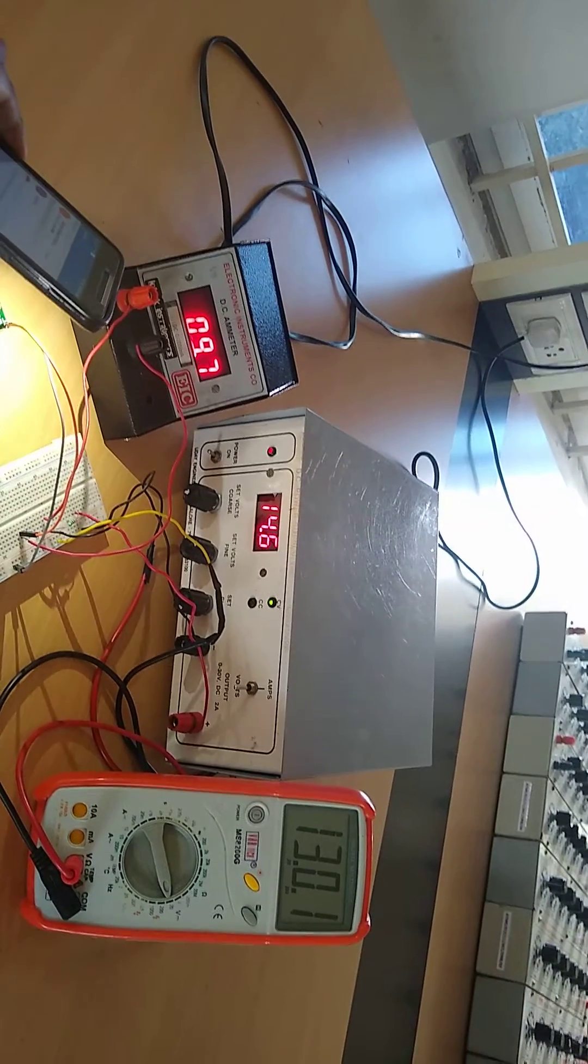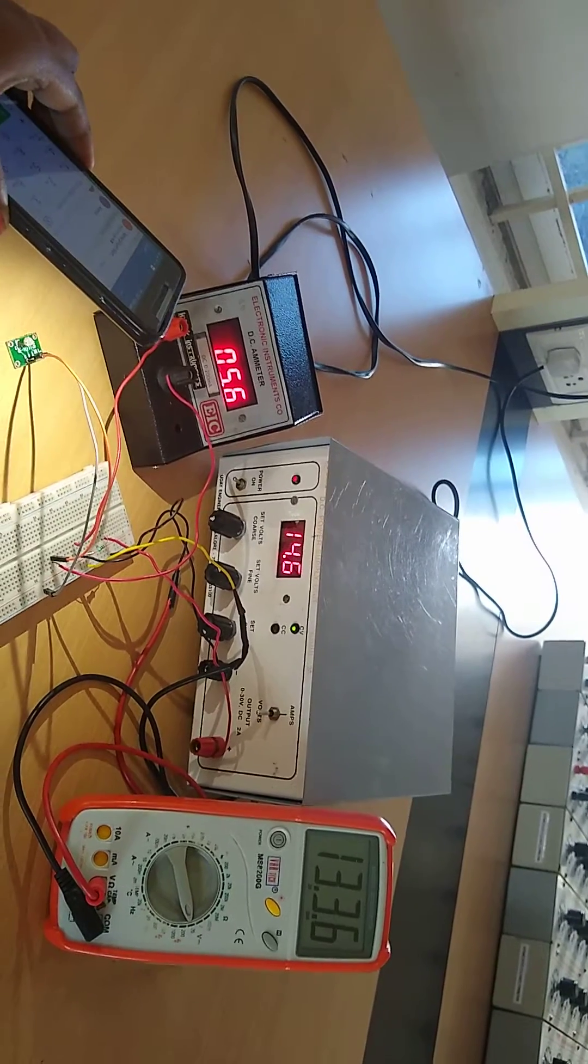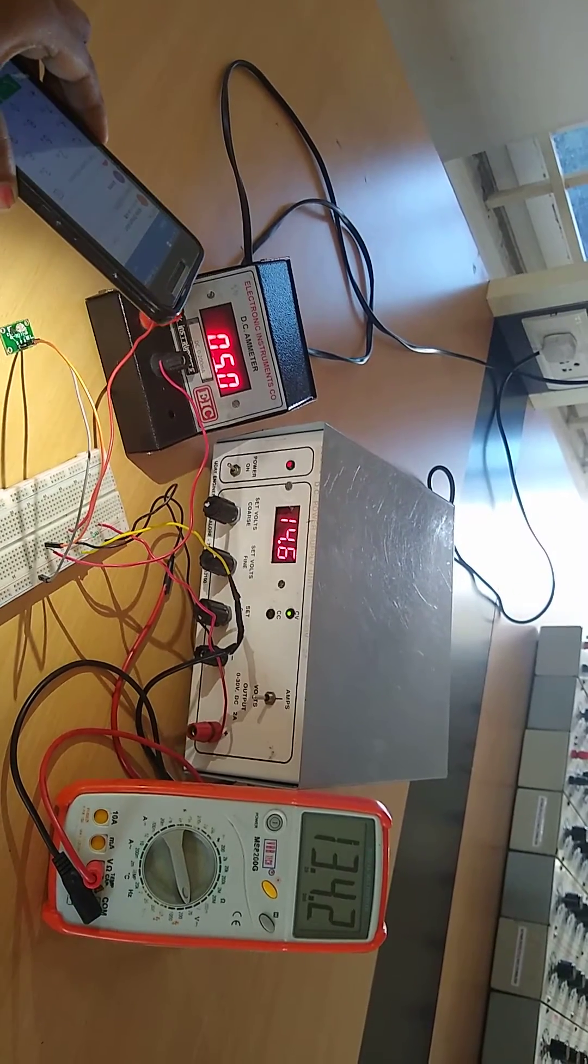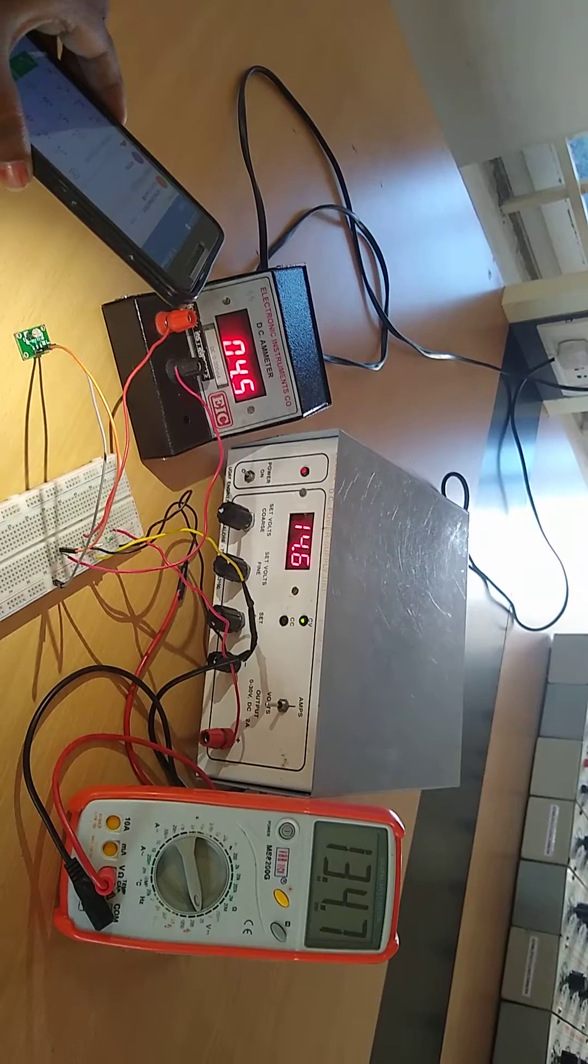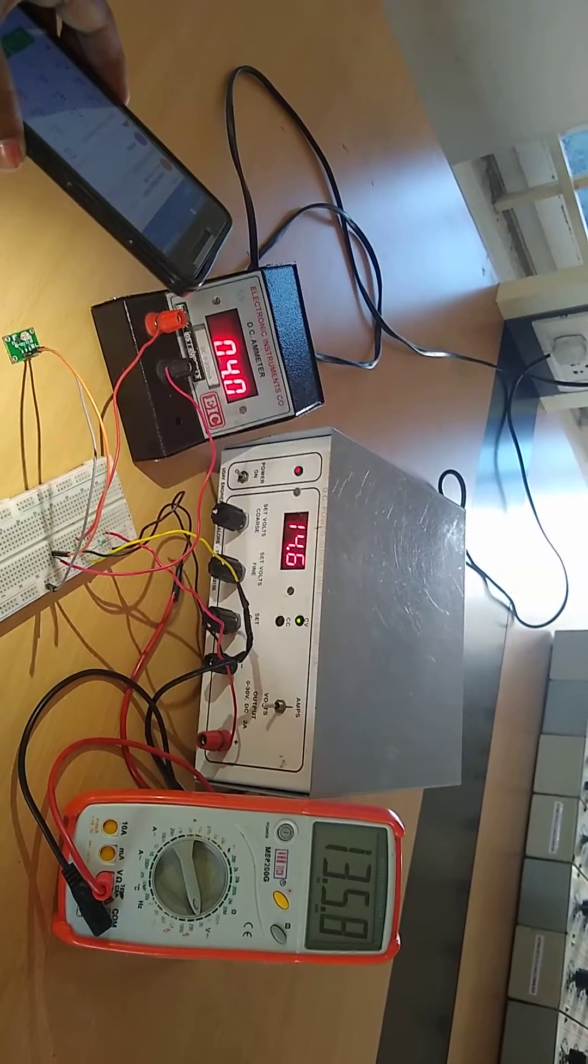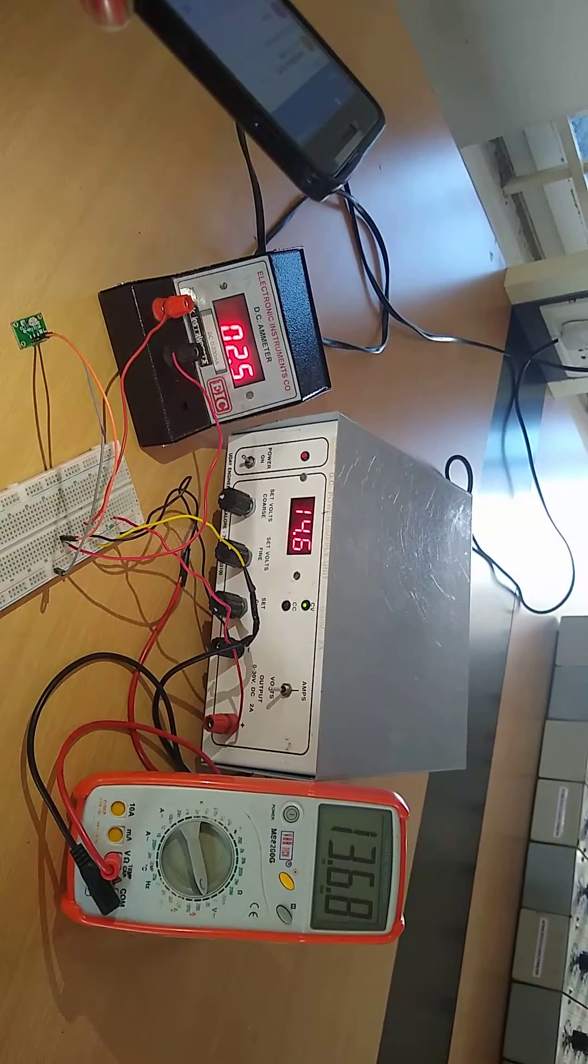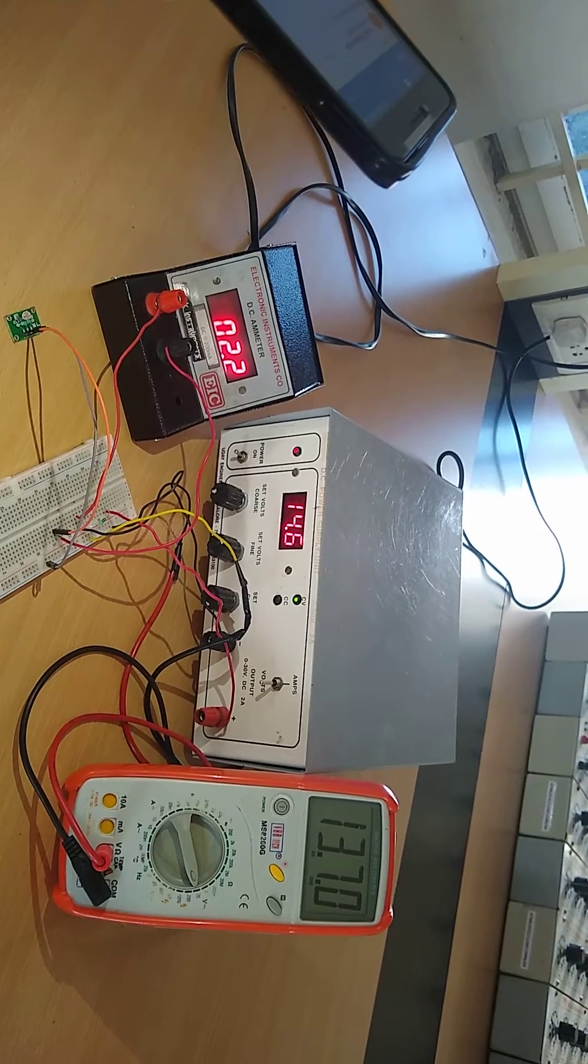As light intensity decreases, the milliammeter is showing less values and the voltmeter is increasing. By this we can note down the VI characteristics of LDR. Light intensity decreases, the current is decreasing, the voltage is increasing.